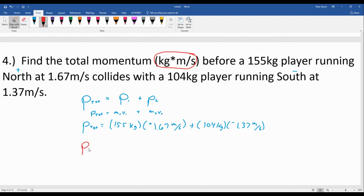Working this down a bit, we can simplify it. We can simplify in pieces. The momentum of the first player ends up being 258.85 kilograms times meters per second. And then minus, see the negative sign here, so we can subtract at the end. 142.48. So that number comes, of course, from multiplying those.